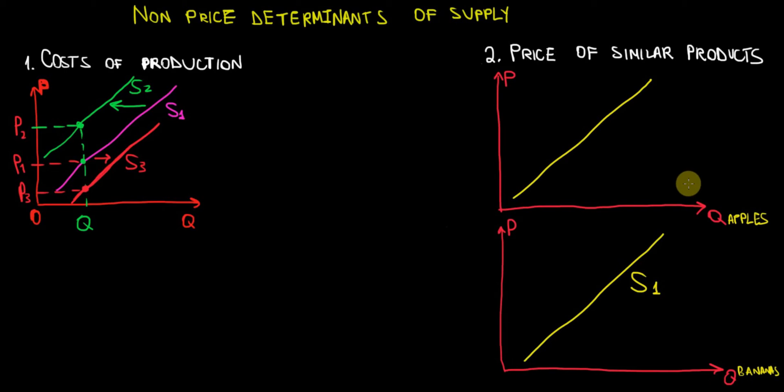Suppose now that the price of the apples increase. Let me give an example here. Let's say that this was the initial price on the apples market, P1, with quantity Q1. So that's Q1 and here we have P1. And all of a sudden, people demand more apples because they perceive them to be tastier or healthier or for whatever other reason.